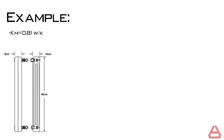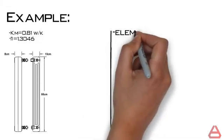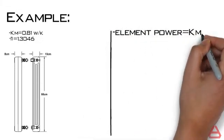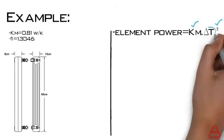From the manufacturer's data sheet, we know that Km is equal to 0.81 and n is equal to 1.3046. Rewriting the characteristic equation we learned previously, we can deduce that in order to calculate the power produced by this element, we still require delta T.